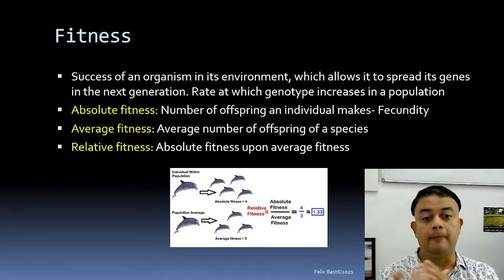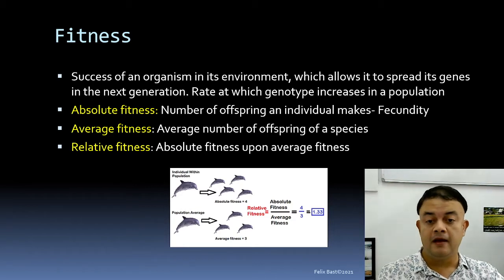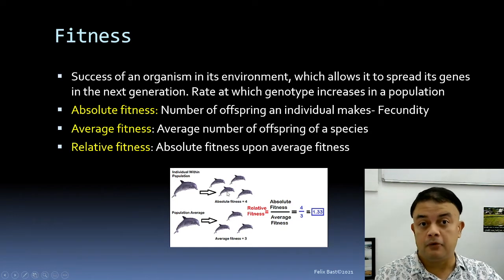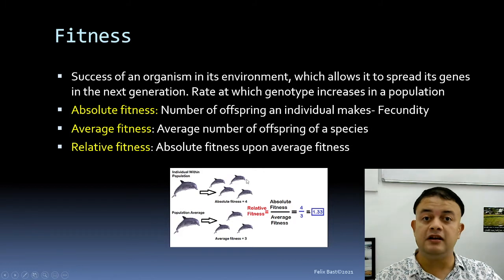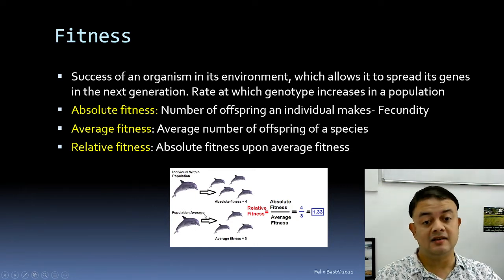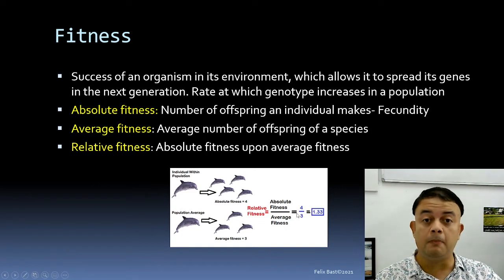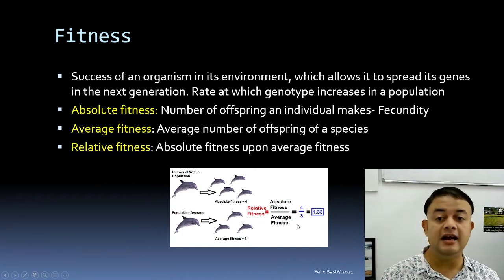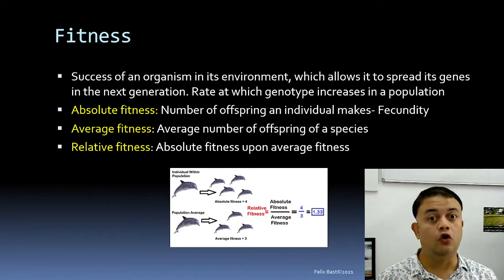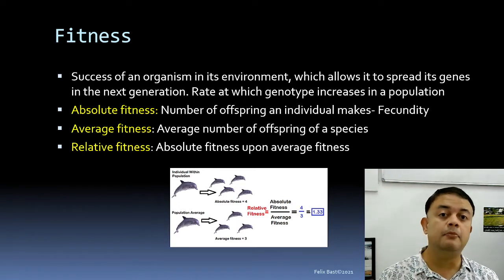For example, if one dolphin produces four offspring, the absolute fitness is four. If the average fitness of the dolphin species is three, then the relative fitness is 4/3 = 1.33. To calculate relative fitness, you need to know the species average and the individual's number of offspring.